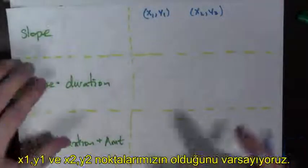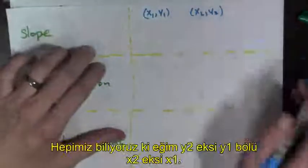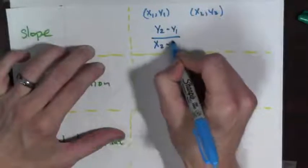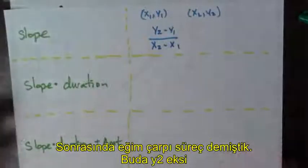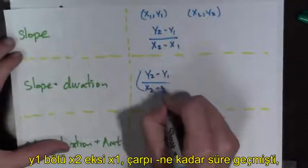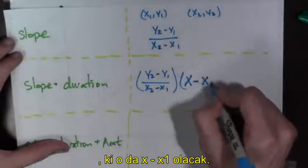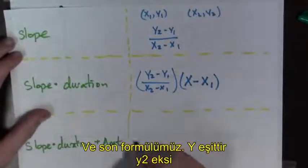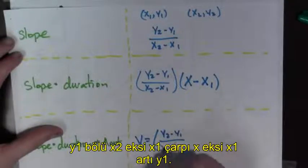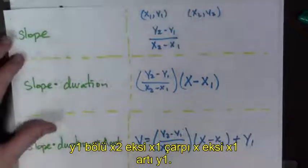Now, let's push this a little further. Let's really use some algebra here. Suppose we have our points x1, y1 and x2, y2. Again, first we found slope. And we should all know that slope is y2 minus y1 all over x2 minus x1. And then we did slope times duration. So, that's going to be y2 minus y1 all over x2 minus x1 times x minus x1 plus y1.